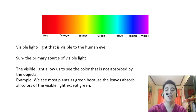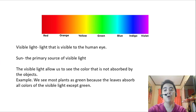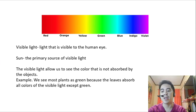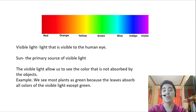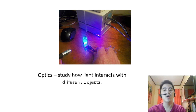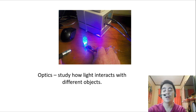The visible light allows us to see the color that is not absorbed by objects. For example, we see most plants as green because the leaves absorb all colors of the visible light except green. So to understand light further, we will study how light interacts with different materials — and that's what we call optics. Optics is the study of how light interacts with different objects. We will study about reflection, refraction, absorption, and transmission of light.